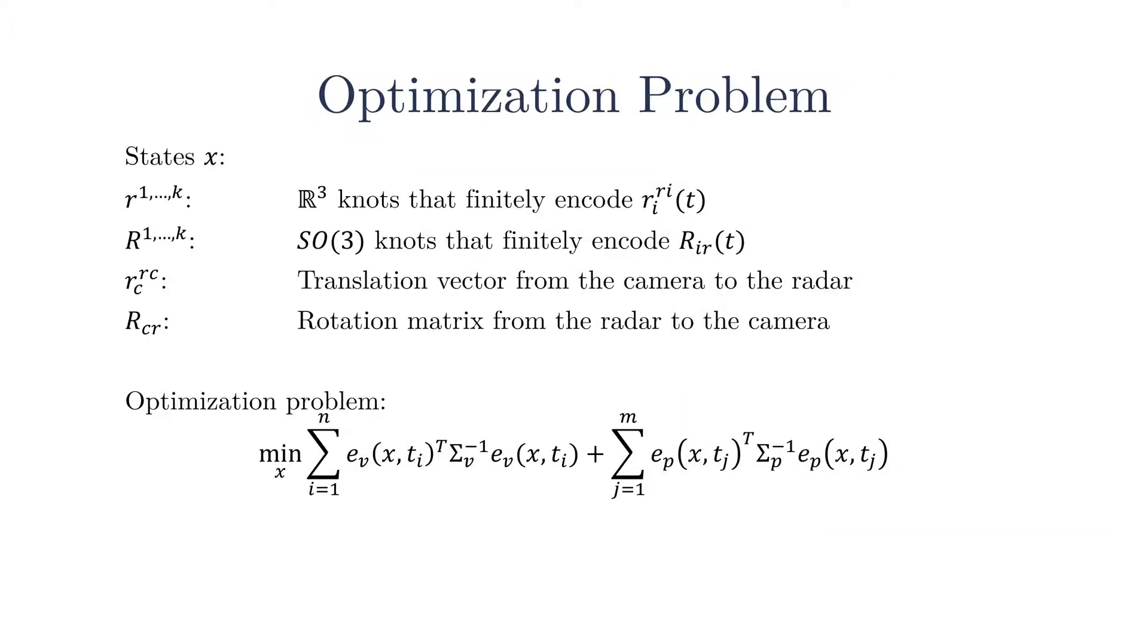Having presented our measurements and state representation, I will take a few seconds to review our calibration model. We wish to estimate the translational control points that encode the translation of the system, the rotation control group elements that encode the rotation of the system, the translation between the camera and the radar, and the rotation between the camera and the radar. The objective is to minimize the weighted radar velocity residual and the weighted camera pose residual.